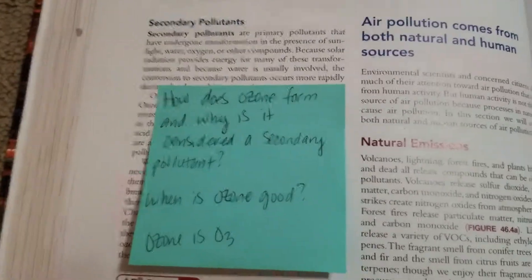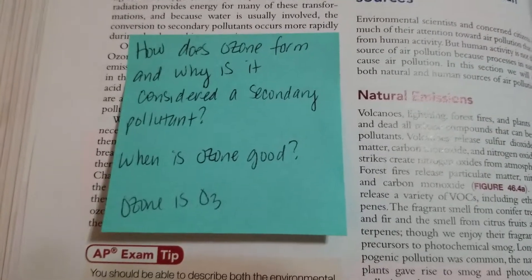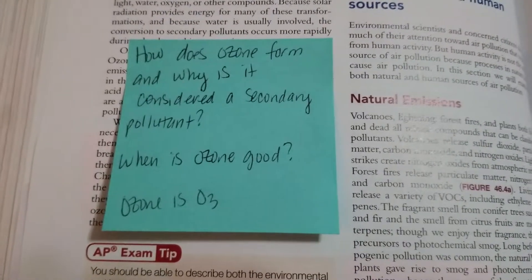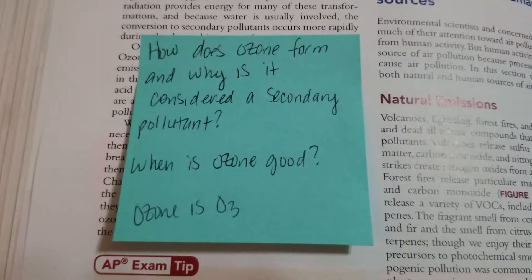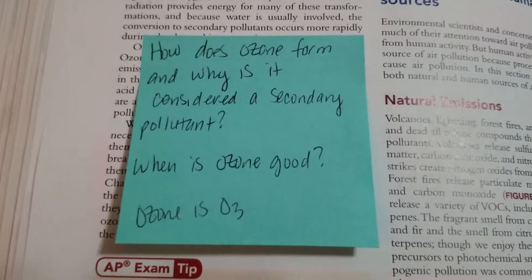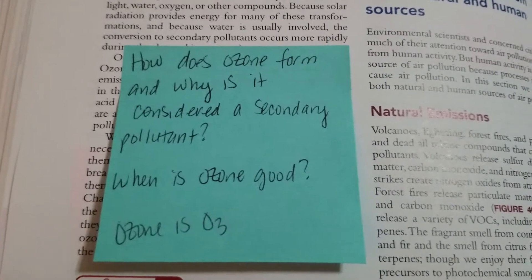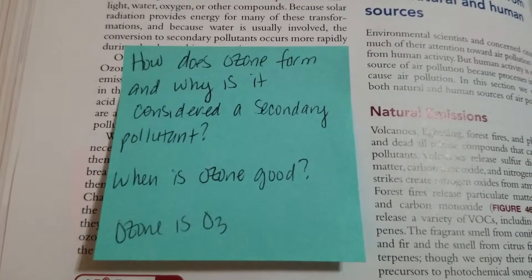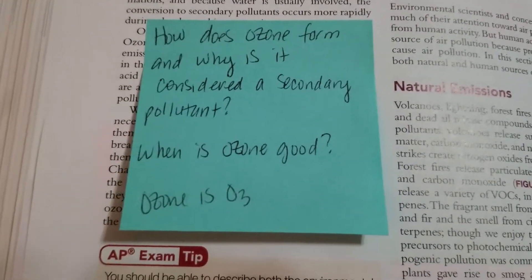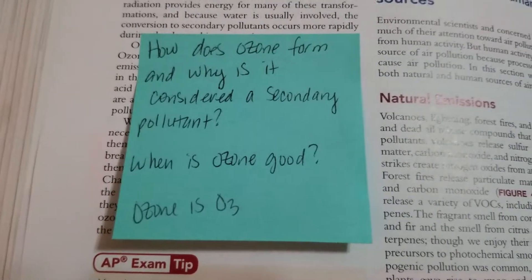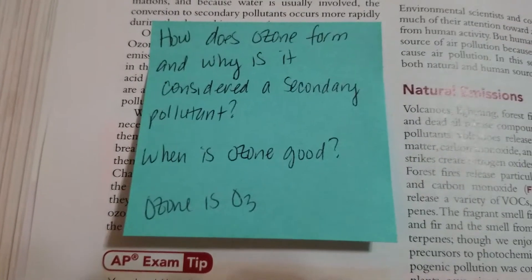Moving over here: how does ozone form and why is it considered a secondary pollutant? Ozone is not always a bad thing — when is ozone good? We had talked about it previously: it's in the stratosphere and it protects us from ultraviolet radiation. But it's also really bad, especially if it's in the troposphere, which is where we live and breathe. Ozone is O3, and tropospheric O3 means ground-level ozone, which is not good.